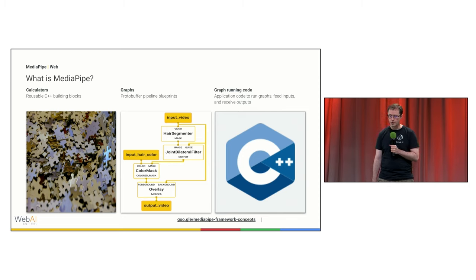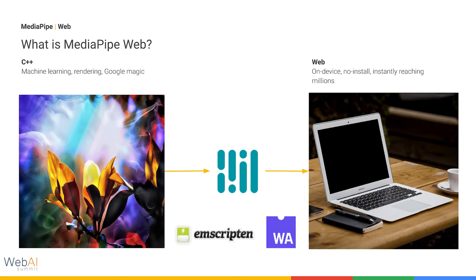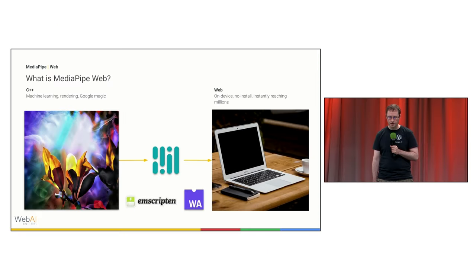MediaPipe offers graph running APIs in Java, C++, Objective-C, Python, TypeScript for web, and more. A lot of code at Google, even on-device code, is already written in C++, so this is actually a great fit for MediaPipe. However, our web apps and demos are written in TypeScript, so MediaPipe Web is how we bridge that gap.